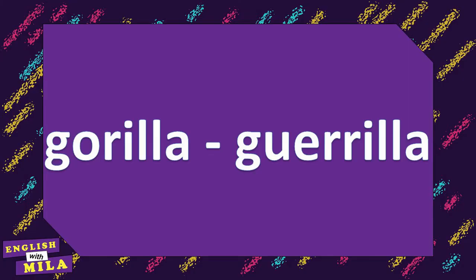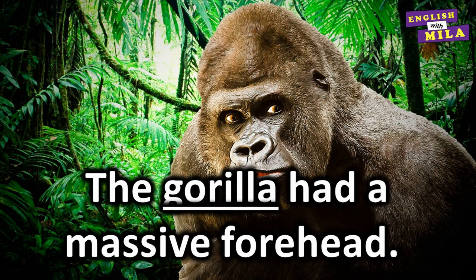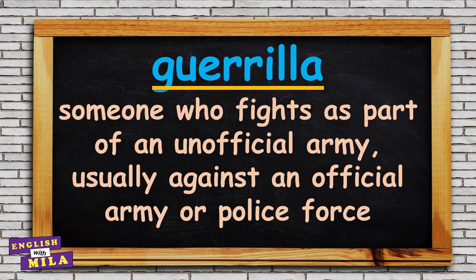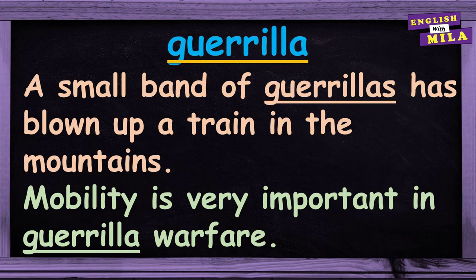And the last pair of homophones for today: gorilla / guerrilla. A gorilla is a large ape that comes from Western Africa. For example: 'The gorilla had a massive forehead.' 'The mountain gorilla is on the verge of extinction.' 'The gorilla rattled the bars of its cage.' And the last word for today — a guerrilla — is a person who fights as part of an unofficial army, usually against an official army or police force. For example: 'Guerrilla groups are active in the province.' 'A small band of guerrillas has blown up a train in the mountains.' 'Mobility is very important in guerrilla warfare.'